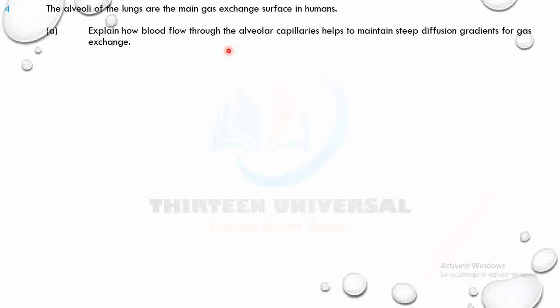Oxygen diffuses from the alveolus into the blood because the alveolus has high partial pressure of oxygen while the deoxygenated blood has low partial pressure of oxygen. The movement of deoxygenated blood into the alveolar capillary creates a steep concentration or diffusion gradient. The deoxygenated blood also has high partial pressure of CO2, while the alveolus has low partial pressure of CO2.